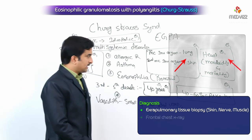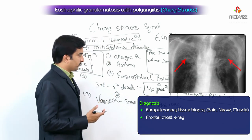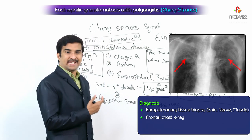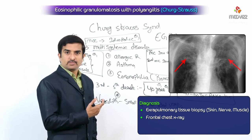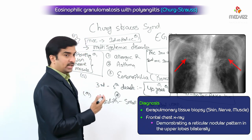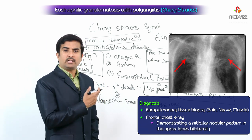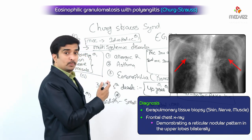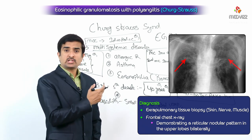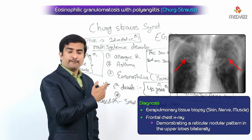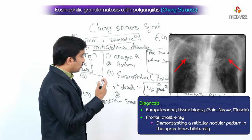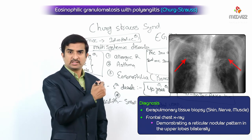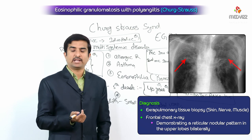In this image of a frontal chest X-ray, it clearly demonstrates a reticular nodular pattern in the upper lobes bilaterally. We can also find an increase in lung volumes.